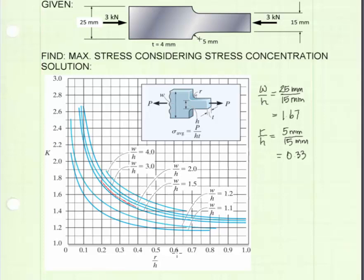Next, we need the ratio R divided by H, which we found to be 0.33. We will enter the bottom of the chart at a value of R over H equal to 0.33.